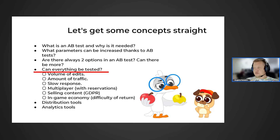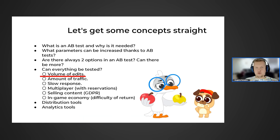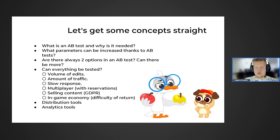Next, let's talk about traffic volume. If you have low traffic, it will be very difficult to do A-B testing, because small deviations require a lot of traffic. A slow response means, for example, if the changes you made are encountered by the user only on the 30th or 60th day of gameplay — some kind of long-term content. Such A-B testing will require a significant investment of time resources to check the results.